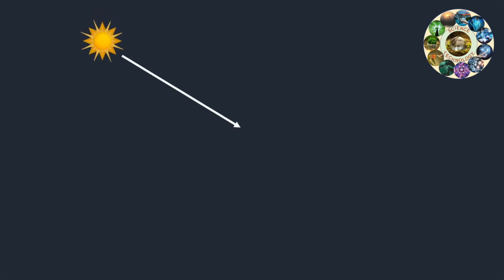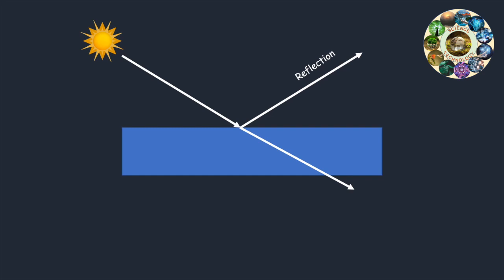Suppose there is a light ray passing through air and is shined on an object at some angle. Several things may happen. First, some of that light may reflect, sort of like when a ball bounces off of a wall — that is called reflection. Some of that light will transmit through the object; this is called transmission.